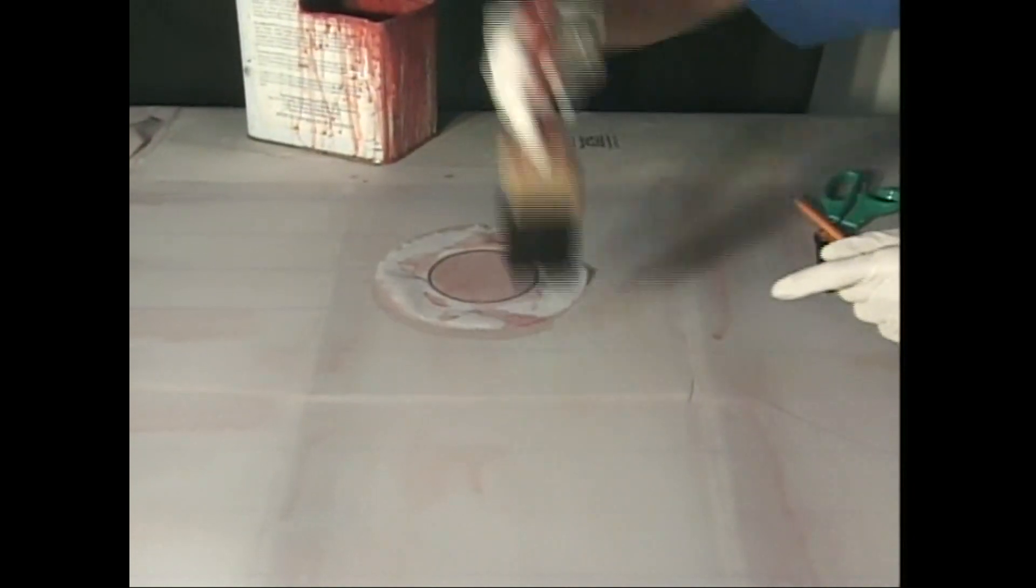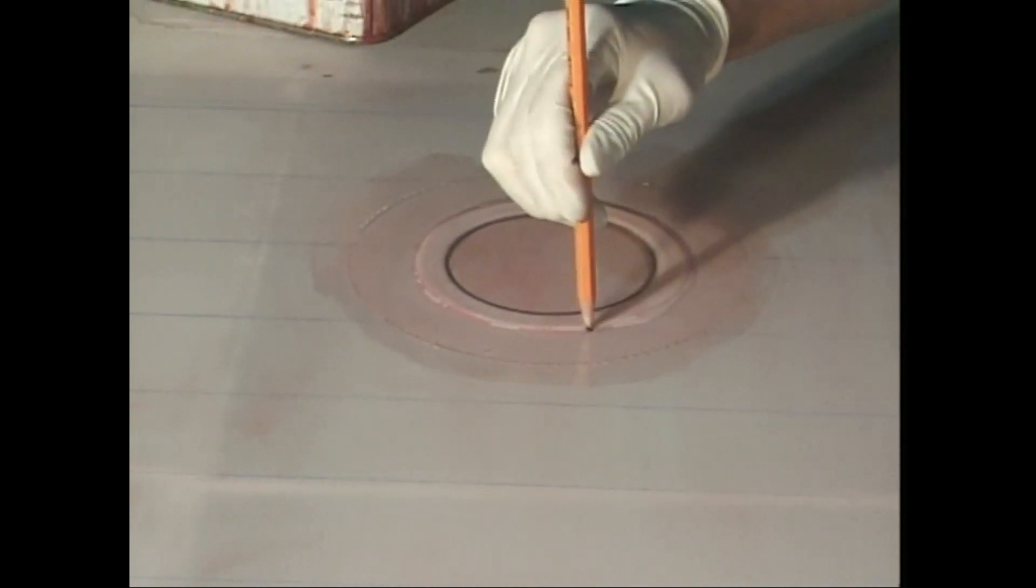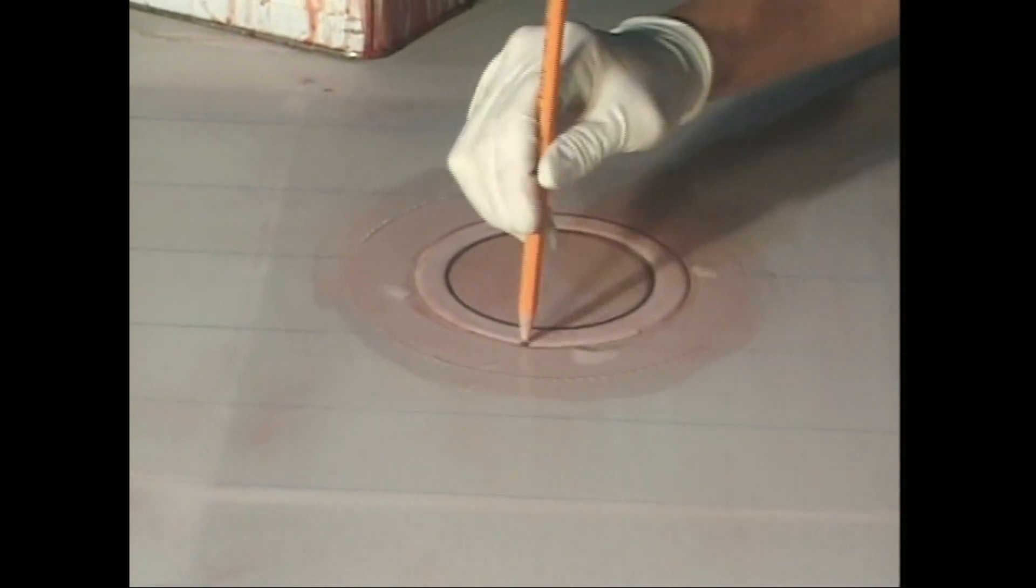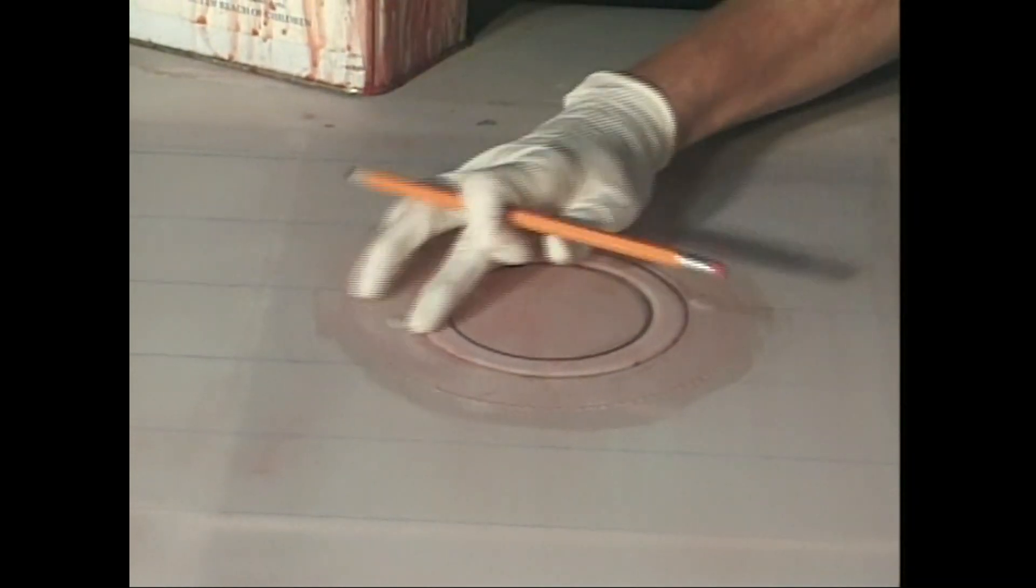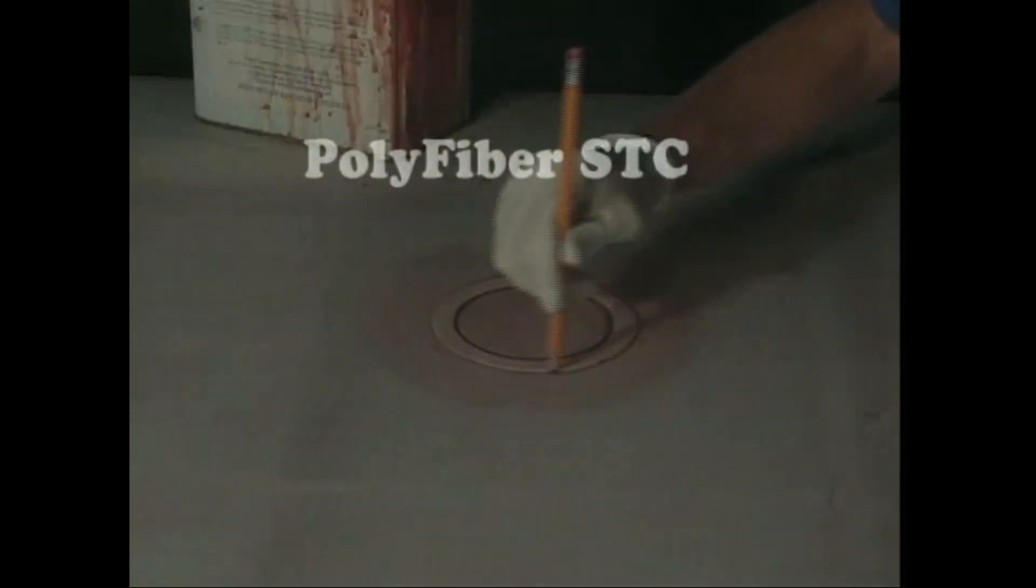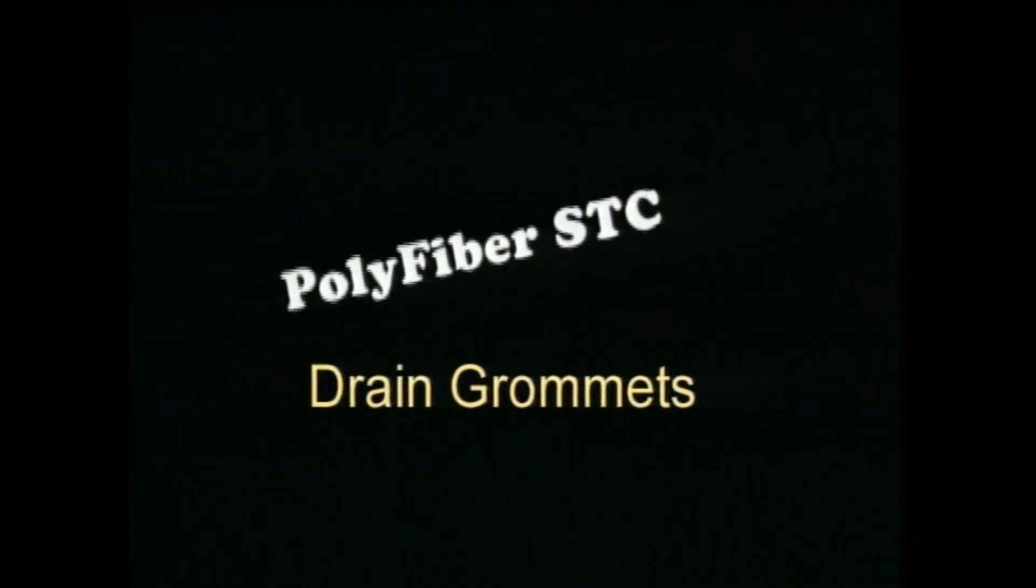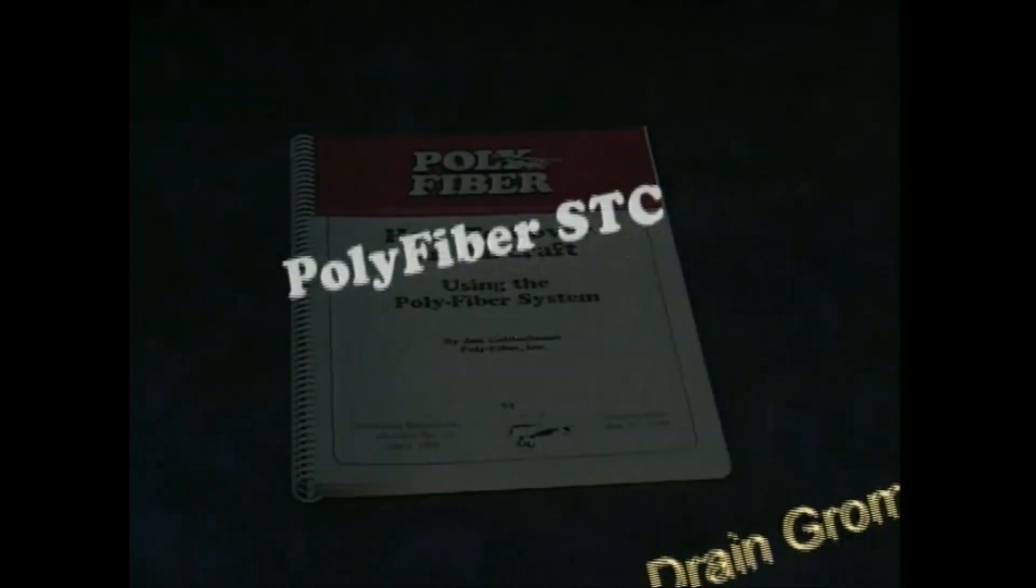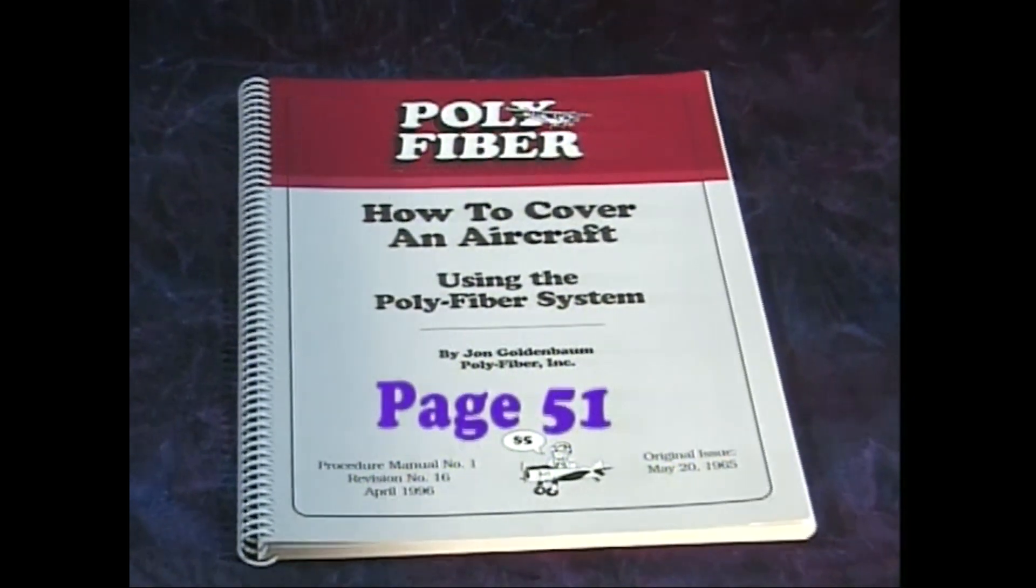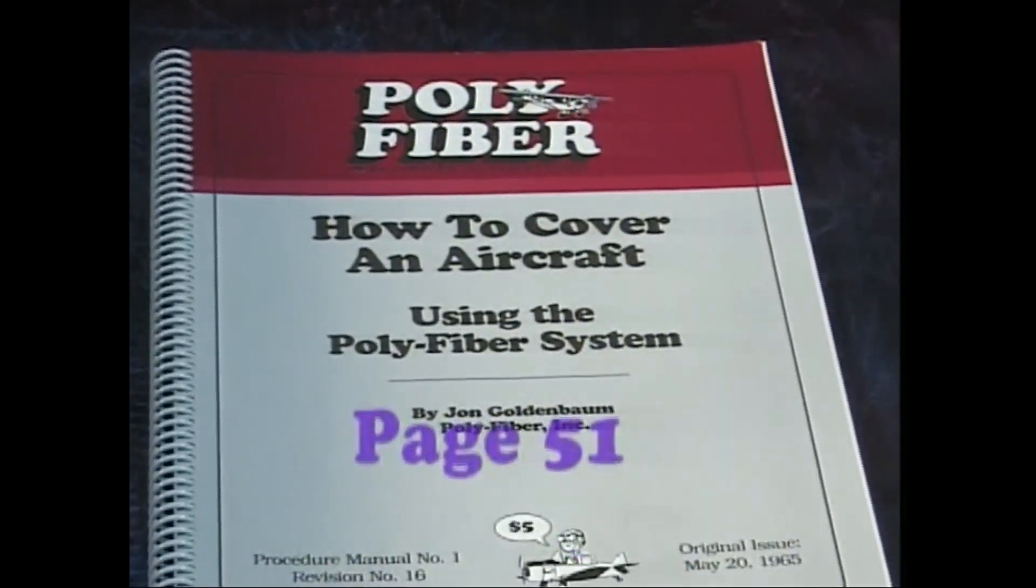Don't worry about the pencil marks. It looks much more professional if the fabric is tucked in tight against the sides of the rings. This same technique should be used when polybrushihg gussets to any plastic or metal reinforcement that is on top of the fabric. Since the polyfiber STC allows for melting drain holes alone without the use of drain grommets, we will not apply grommets to the tripacer. If you elect to do so, read page 51 in your polyfiber manual. We will burn drain holes after the last coats of polyspray have been applied.